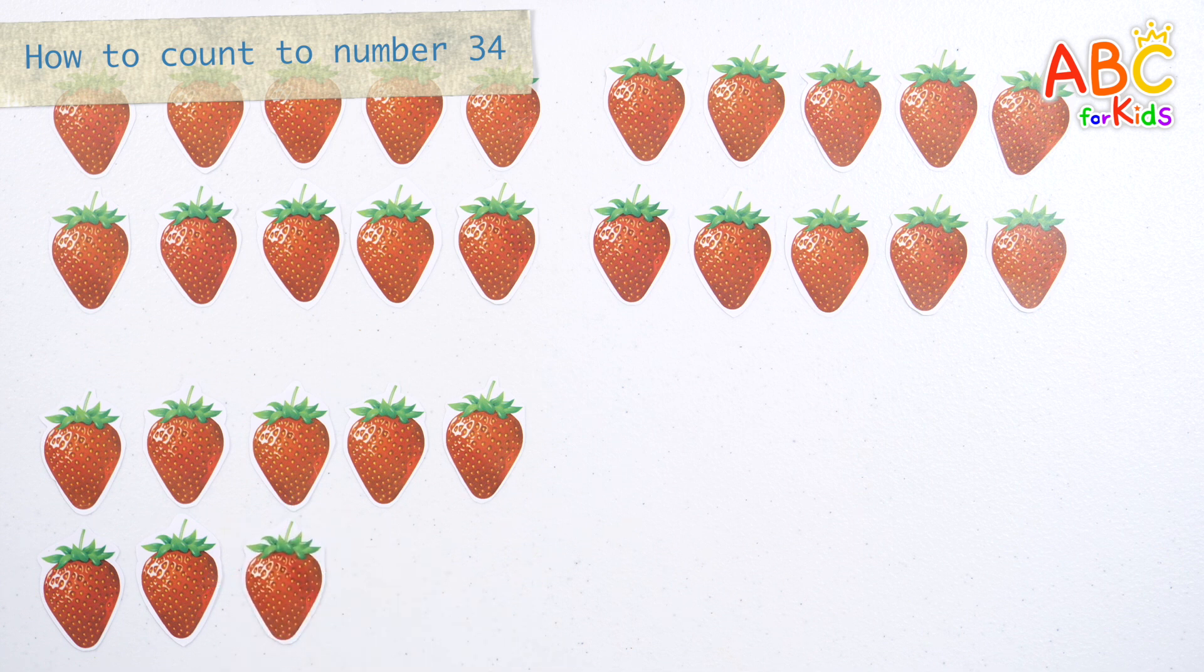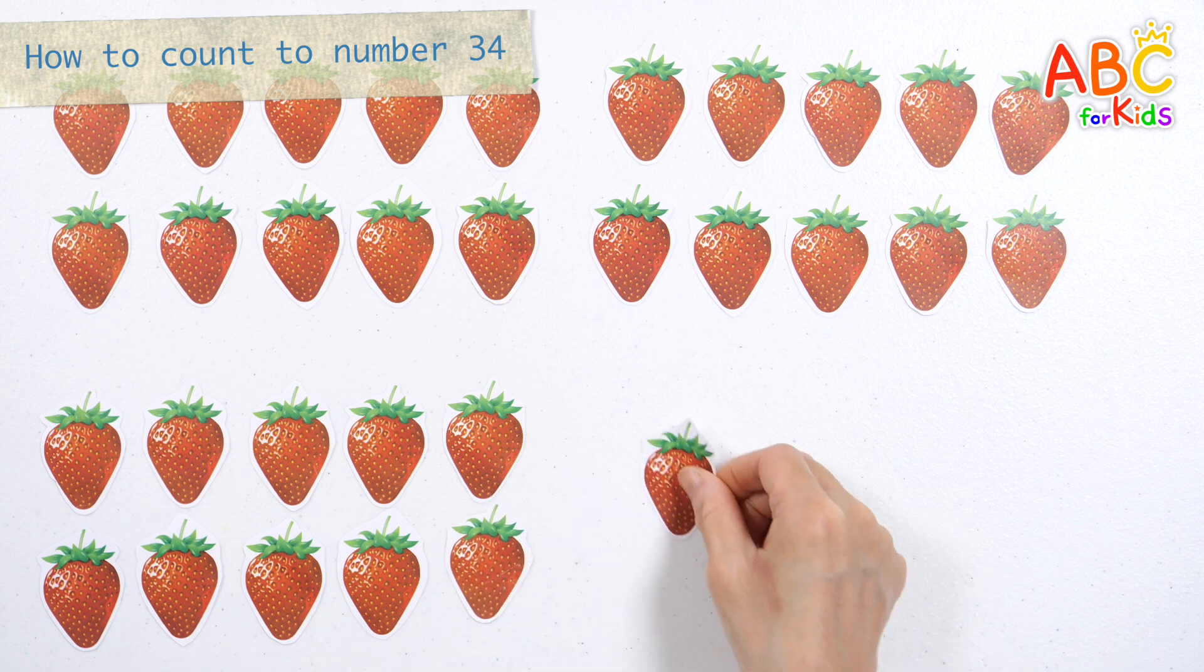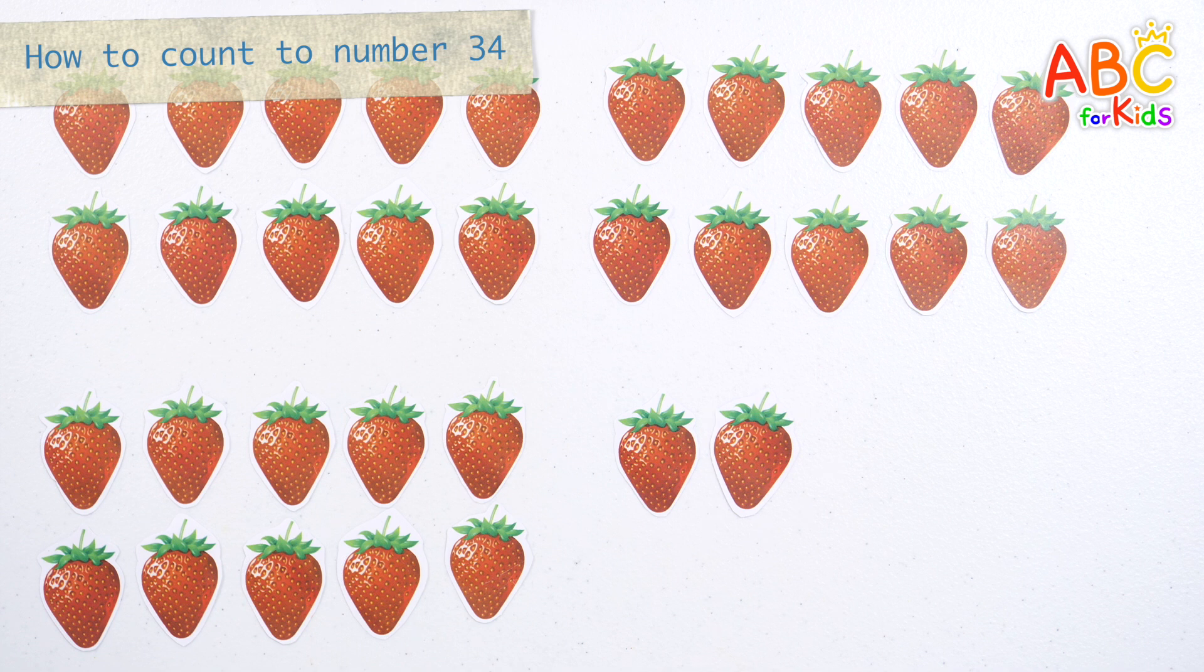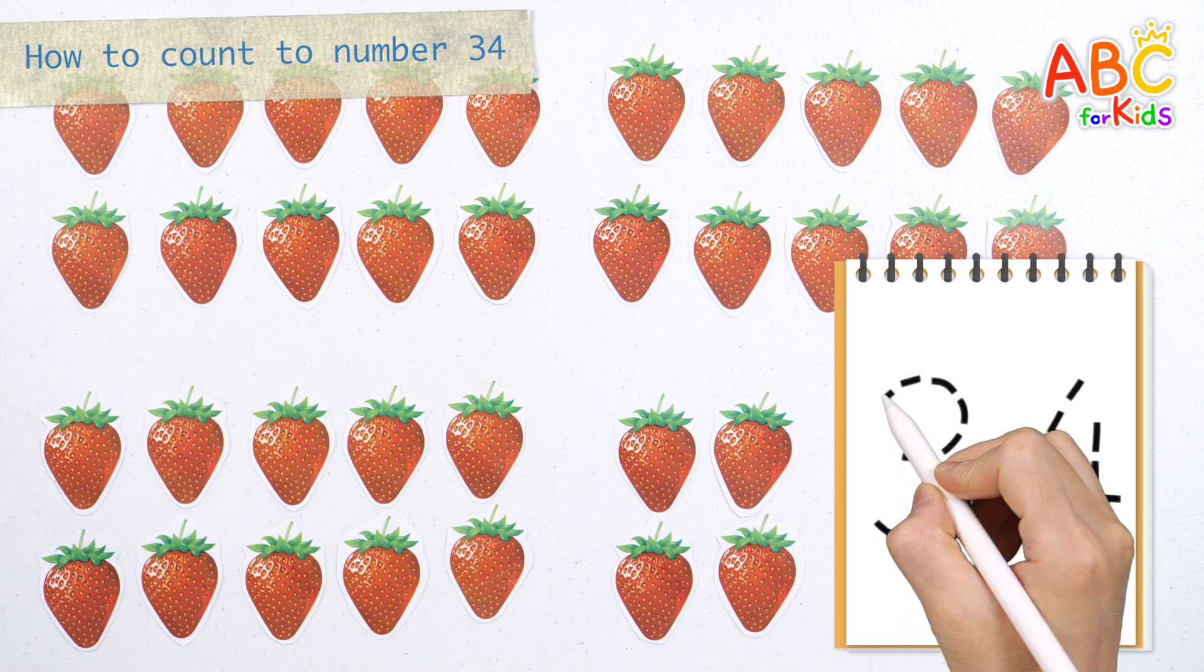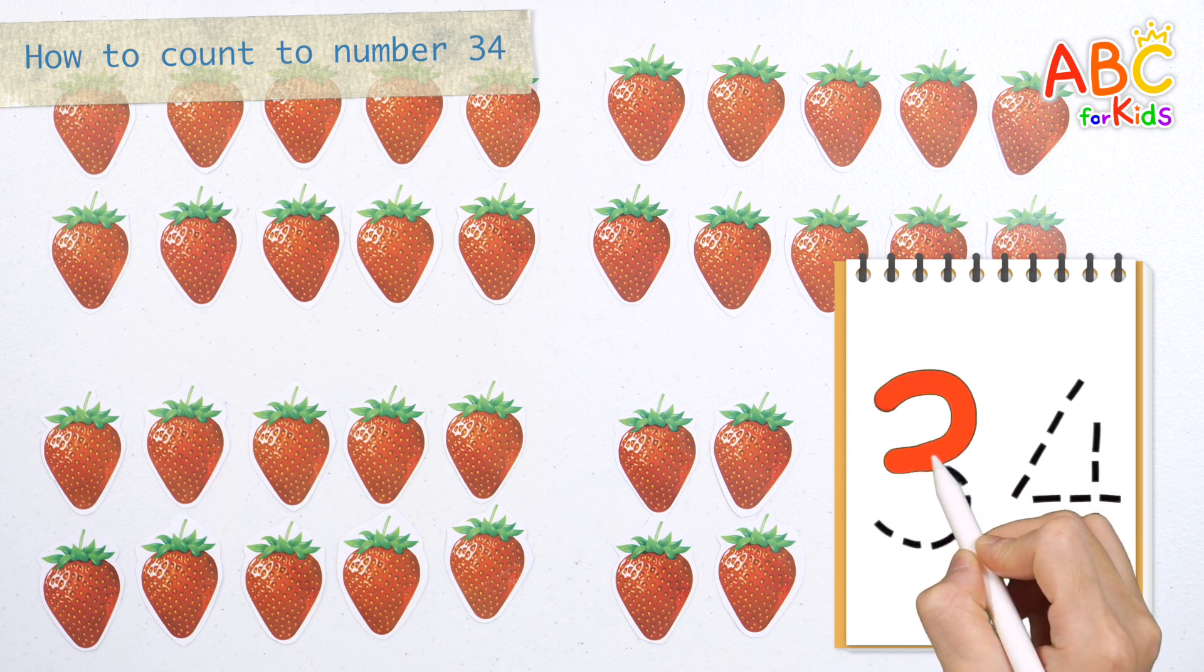Twenty-eight. Twenty-nine. Thirty. Thirty-one. Thirty-two. Thirty-three. Thirty-four. Thirty-four strawberries.